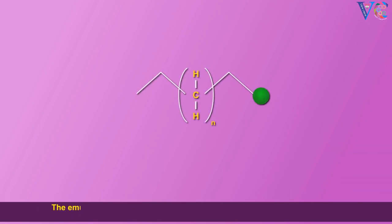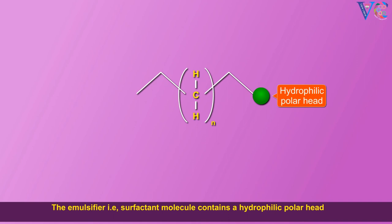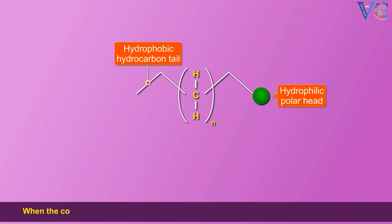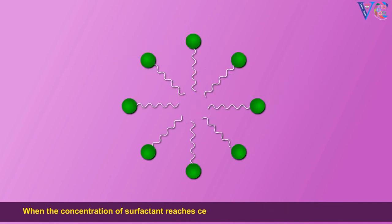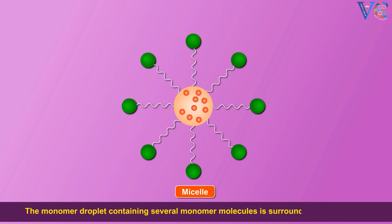The emulsifier, that is the surfactant molecule, contains a hydrophilic polar head and hydrophobic non-polar hydrocarbon tail. When the concentration of surfactant reaches certain level, they aggregate to form a micelle. The monomer droplet containing several monomer molecules is surrounded by the micelle.